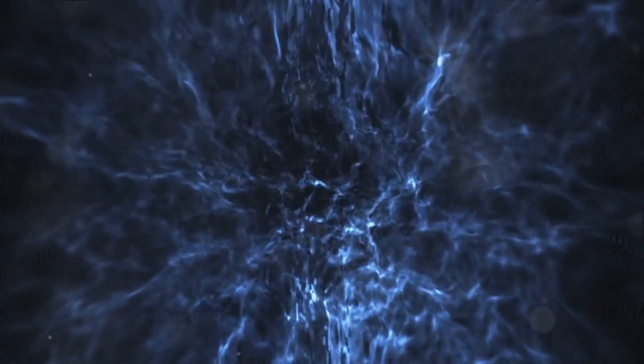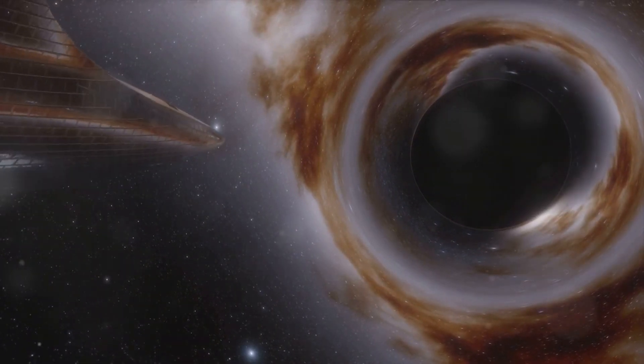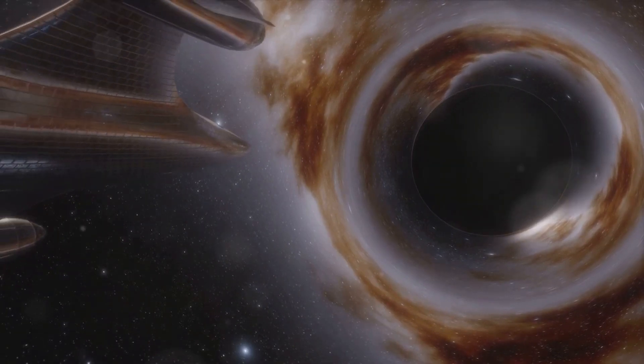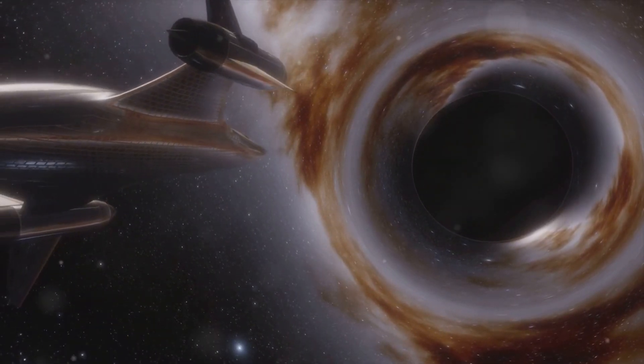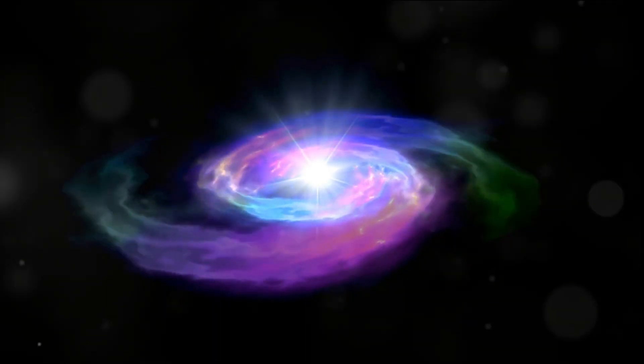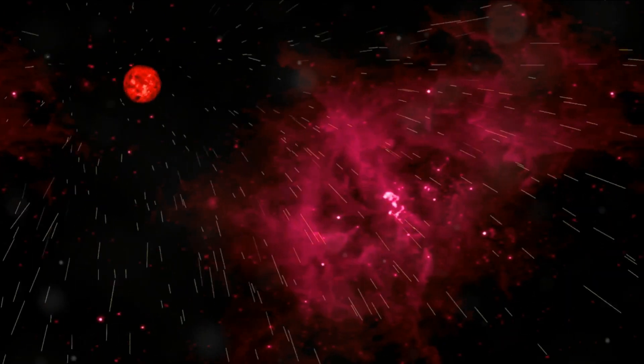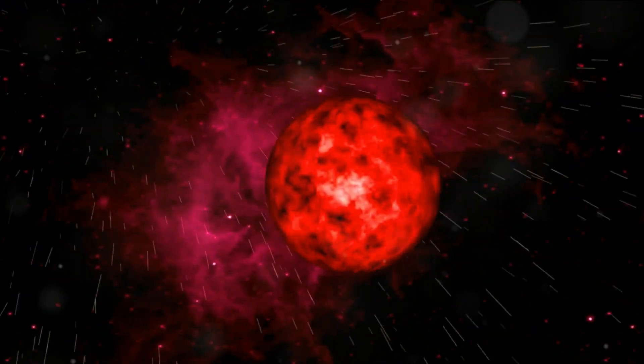But galaxies are more than just their visible matter. They also contain dark matter, a mysterious substance that we can't see, but we know is there because of its gravitational influence. This dark matter binds the galaxies together, acting as the unseen infrastructure that holds these cosmic cities intact. And let's not forget about black holes, the enigmatic centers of many galaxies. These cosmic behemoths are the downtown skyscrapers of the galactic city, reigning over their surroundings with their immense gravity. Each galaxy, a complex system of stars, dust and dark matter, is a testament to the universe's grand architecture.